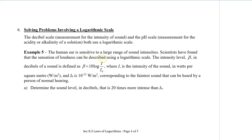The human ear is sensitive to a large range of sound intensities. Scientists have found that the sensation of loudness can be described using a logarithmic scale. The intensity level, β, which is measured in decibels of a sound, is defined as β equals 10 times log i divided by i₀. i is the intensity of the sound, which is measured in watts per square meter. And i₀ is 10 to the power of negative 12 and also watts per square meter, corresponding to the faintest sound that can be heard by a person of normal hearing.